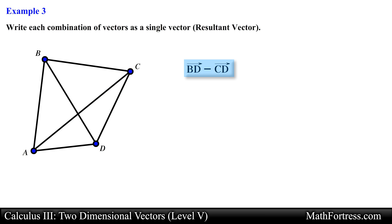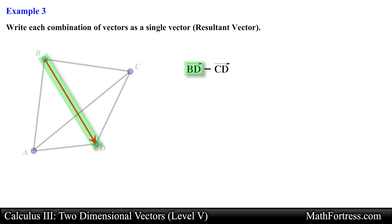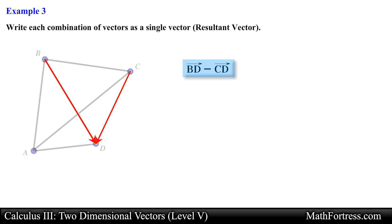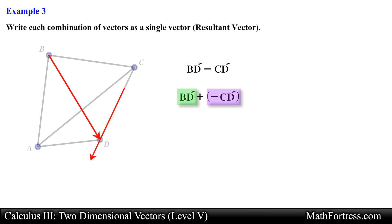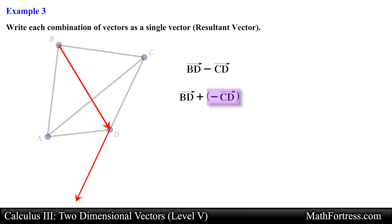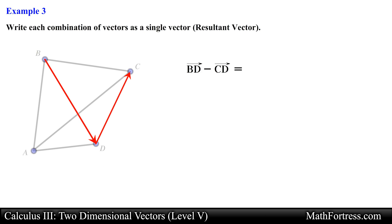Here we are asked to find the difference between vector BD and vector CD. In order to carry out this difference we can think about this problem as adding the negative of vector CD to vector BD. So we align the tail of vector CD to the head of vector BD, then flip vector CD so that it points in the opposite direction, and apply the triangle law. The resultant vector in this example would be equal to vector BC.